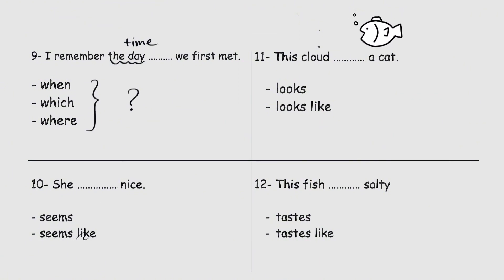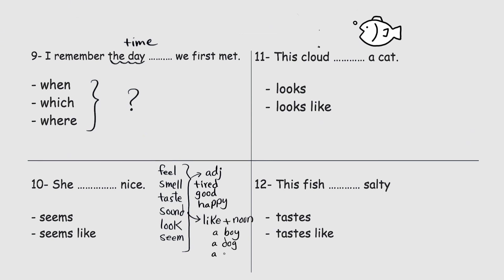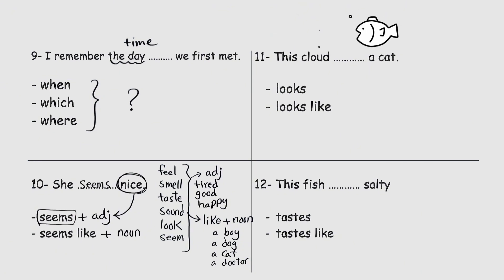She blank nice — she seems nice, or she seems like nice? The verbs feel, smell, taste, sound, look, and seem are normally followed by an adjective — like 'you look tired', 'it sounds good', or 'she seems happy'. But sometimes they're followed by 'like' plus a noun. A noun is the name of something: a boy, a dog, a cat, a doctor. So 'seems' alone needs an adjective, and 'seems like' needs a noun. 'Nice' is an adjective, so the answer is 'seems': she seems nice.